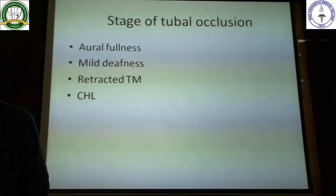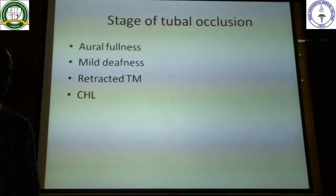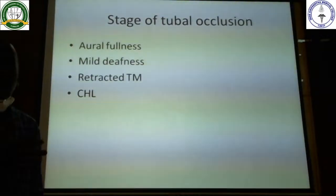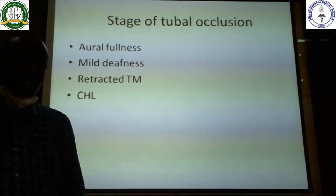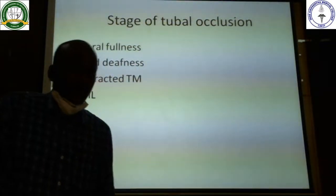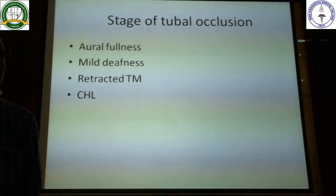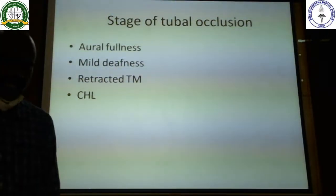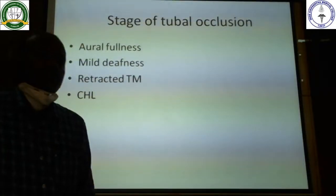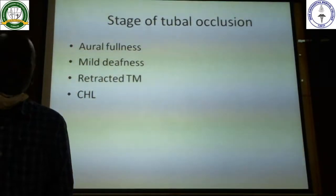The negative pressure within the Eustachian tube due to tubal occlusion results in ear fullness. Patients — whether children or adults — present with mild deafness or fullness, sometimes complaining their ear feels completely blocked. On clinical examination, the tympanic membrane will be mildly retracted due to negative middle ear pressure from Eustachian tube blockage. Signs of retracted tympanic membrane include absence or distortion of the cone of light and foreshortening of the handle of malleus.